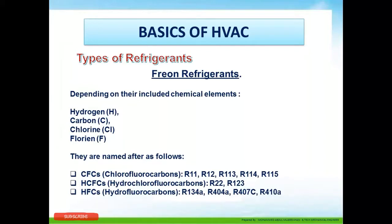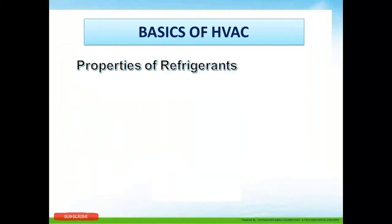A refrigerant's chemical composition includes hydrogen, carbon, chlorine, and fluorine. Refrigerants are also known as CFC, HCFC, and HFC. CFC stands for chlorofluorocarbons, HCFC is hydrochlorofluorocarbons, and HFC is hydrofluorocarbons. These are the properties and classifications of refrigerants.